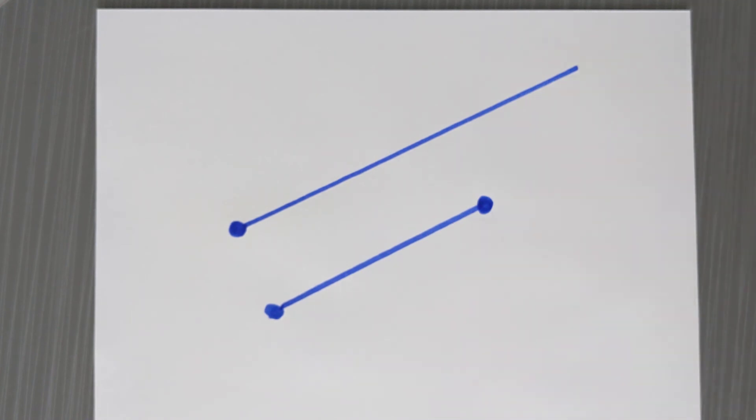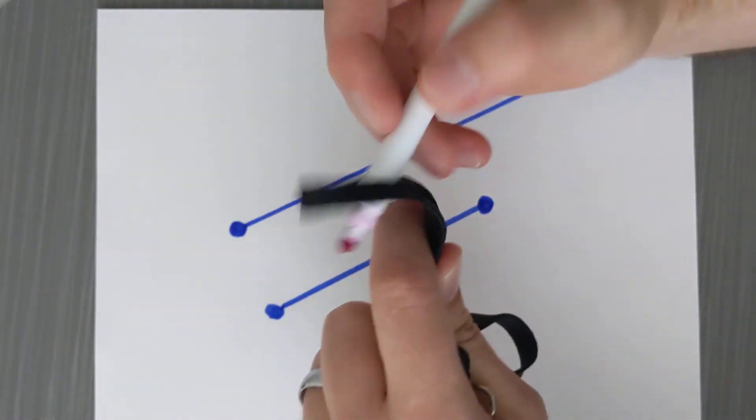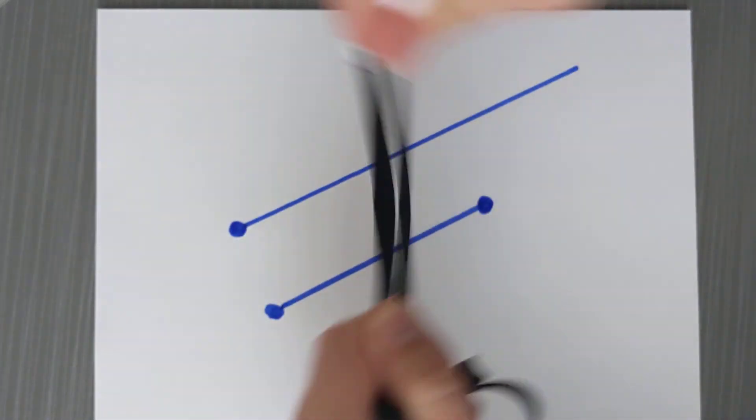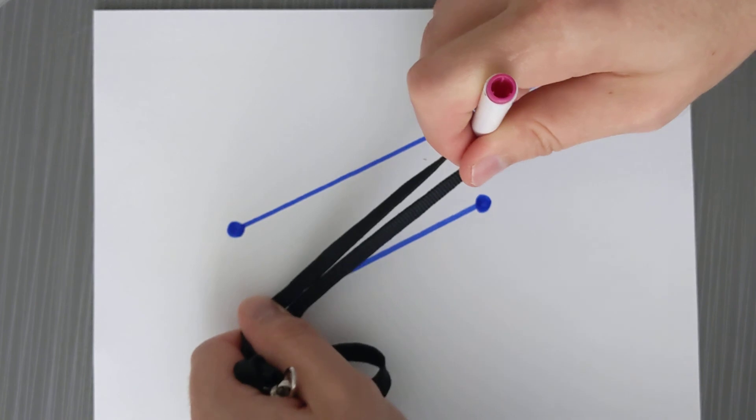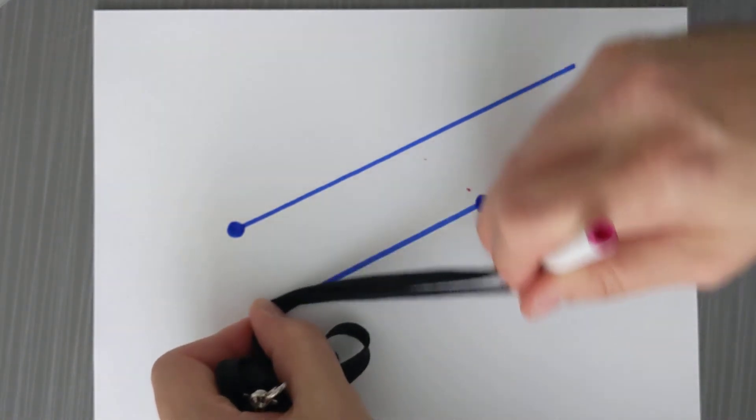If I want to copy this segment, I'm going to use a string as a compass. Now what I'm going to do is I'm going to loop my marker through the string, and I'm going to move my marker to draw circles. I will measure from this point to this point.